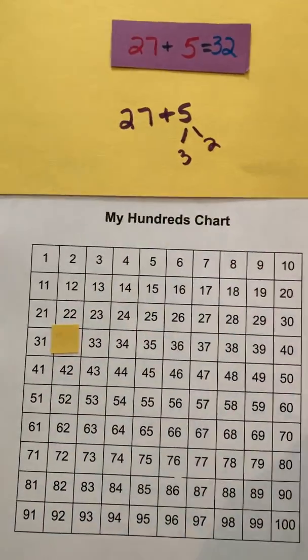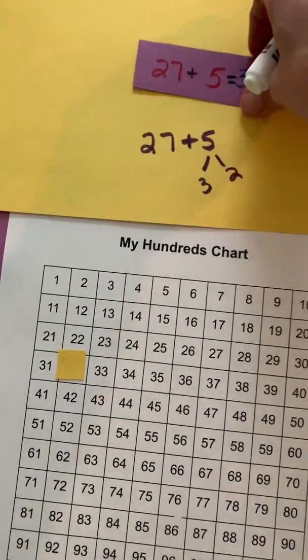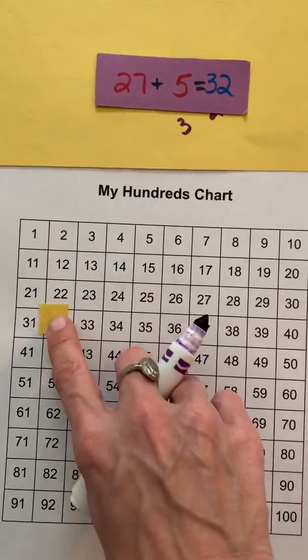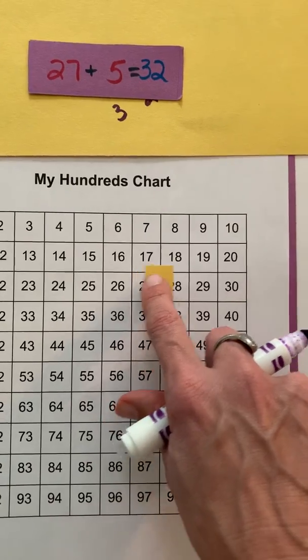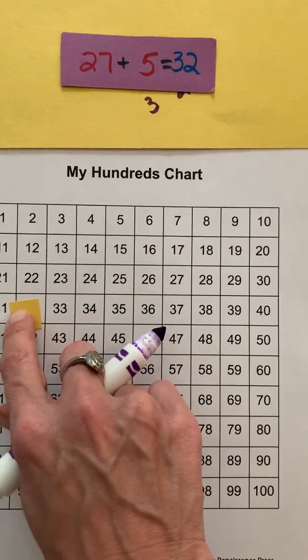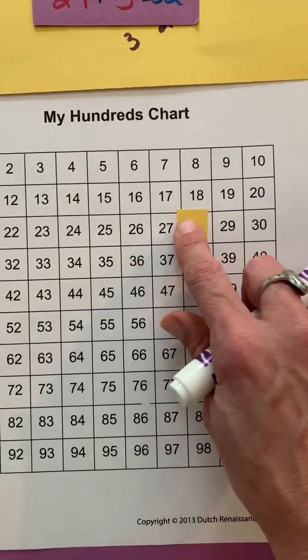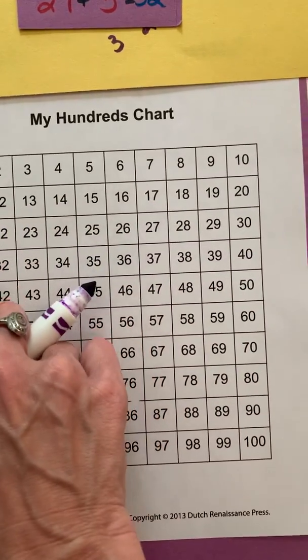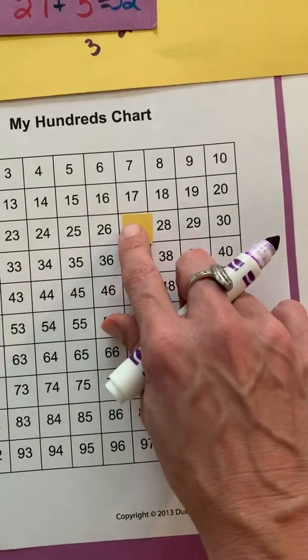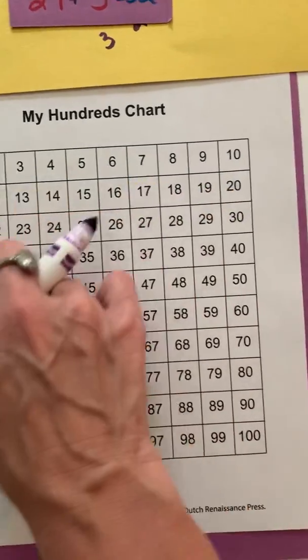So that's definitely a challenge. You can definitely challenge yourself to do that, but there's nothing wrong too with just sticking to that I'm at 27 and I add on five: one, two, three, four, five. Remember when we're counting, we have to jump off. We can't say one, two, three, four, five. You can see that gives me an incorrect answer. So make sure it's one, two, three, four, five.